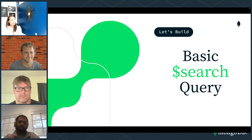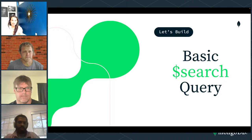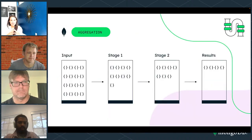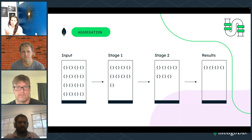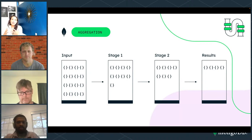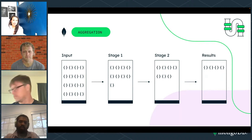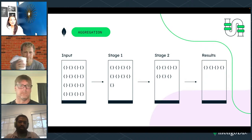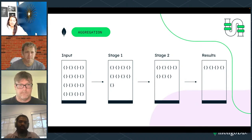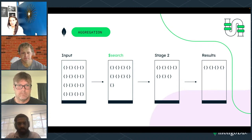Let's start with a basic Atlas Search refresher. To build something in Atlas Search, you need to be familiar with our aggregation framework. If you already use MongoDB, you may know it — you take a series of documents and apply different stages that transform results into the next stage. An Atlas Search query is an aggregation pipeline where dollar-sign search is the first stage in that query.